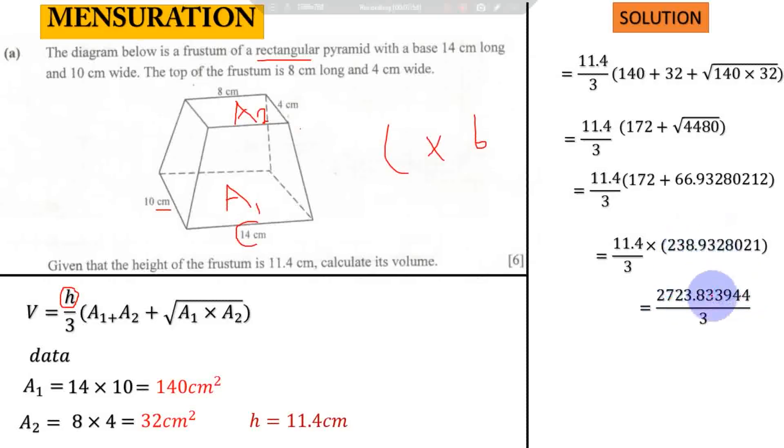Divide it by 3. When you divide by three you get 907.944648. Remember our instructions say we need to leave our answer to three significant figures. Coming back to the integral part, we have exactly three numbers, so our rounding digit is 7. Check the next number after the point - it's 9, which is greater than 5, so we add one to 7. To three significant figures, the answer is 908 centimeter cube because it is volume. This is your final answer.